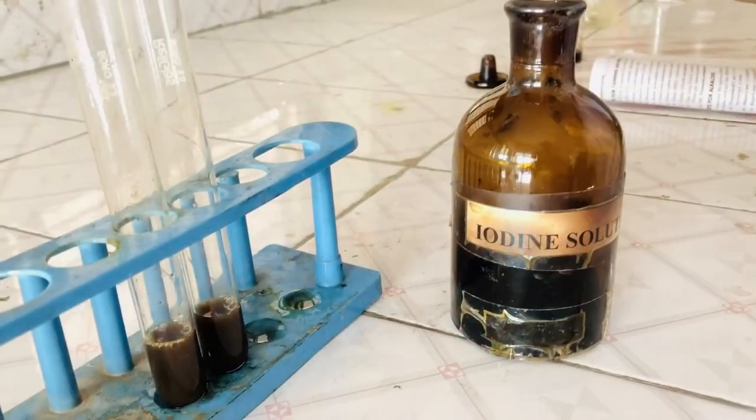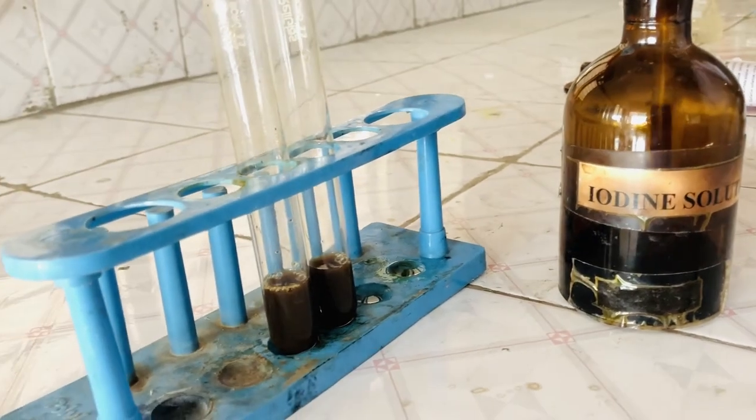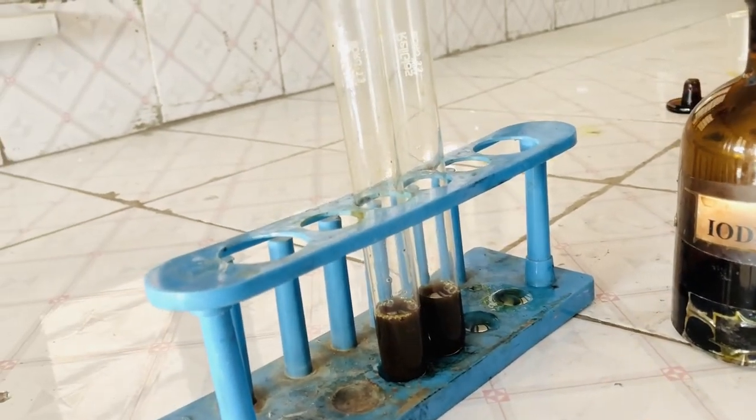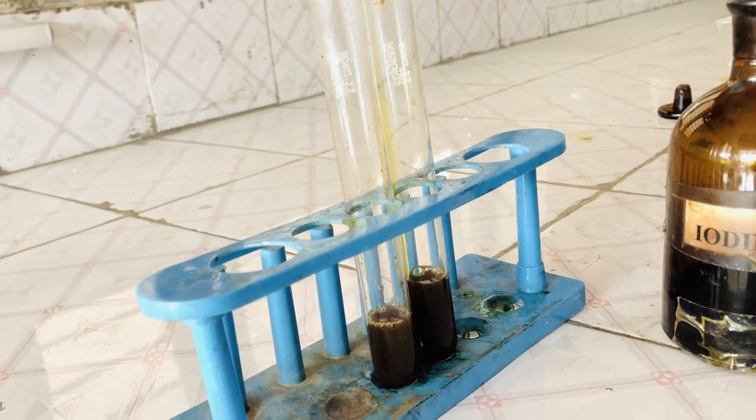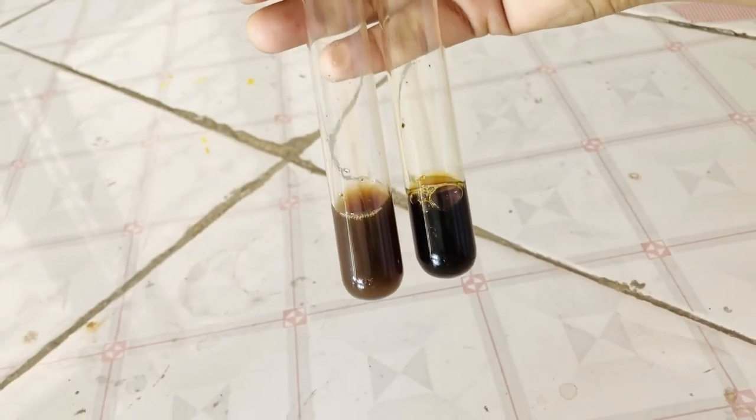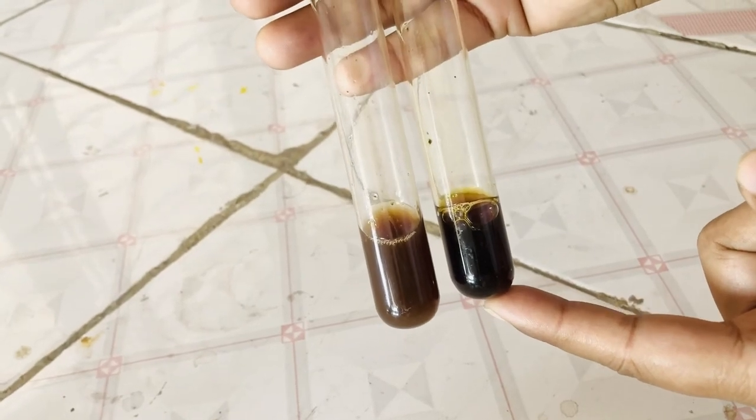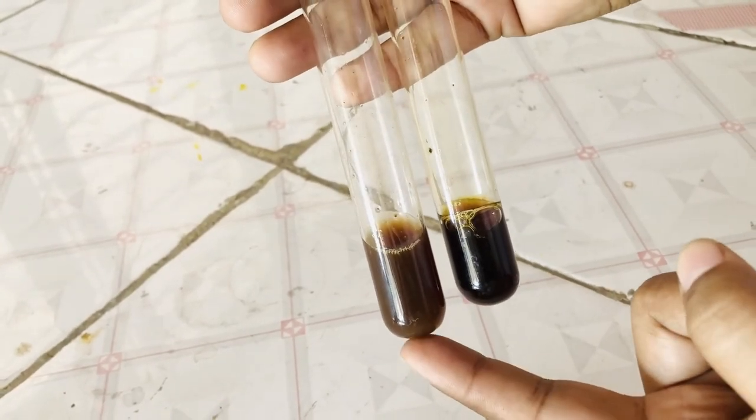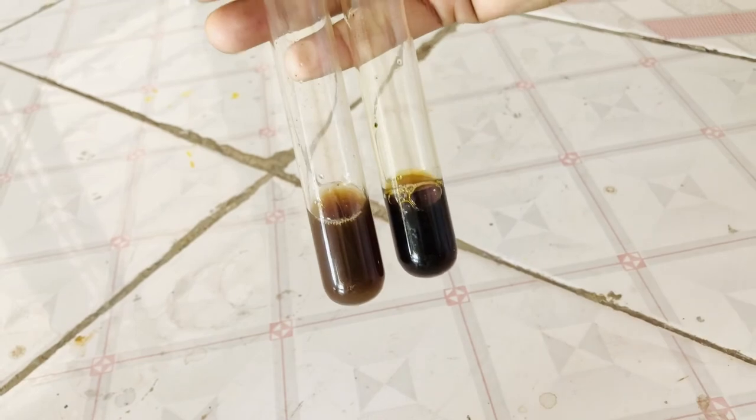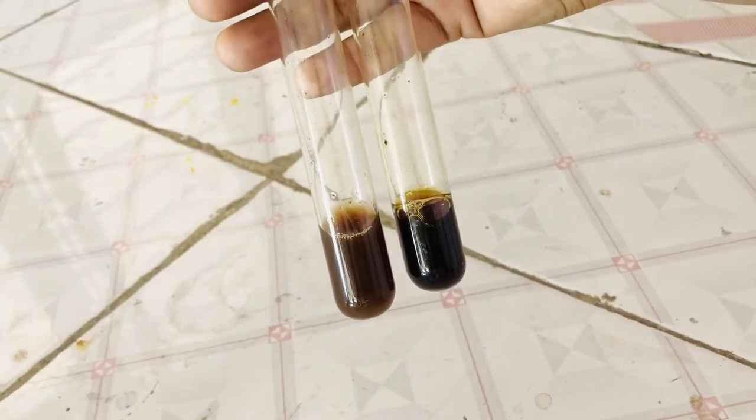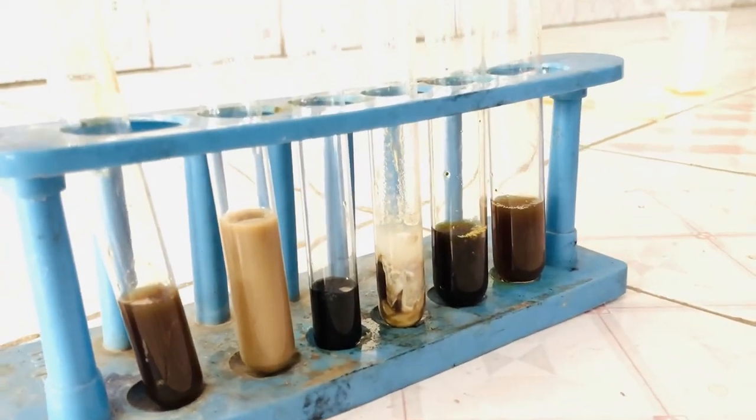Now we will add iodine solution to the test solution. You can see after this test the transient red color is produced in the test solution as compared with the standard solution. This test also confirms the tannin results. Thank you for watching this video.